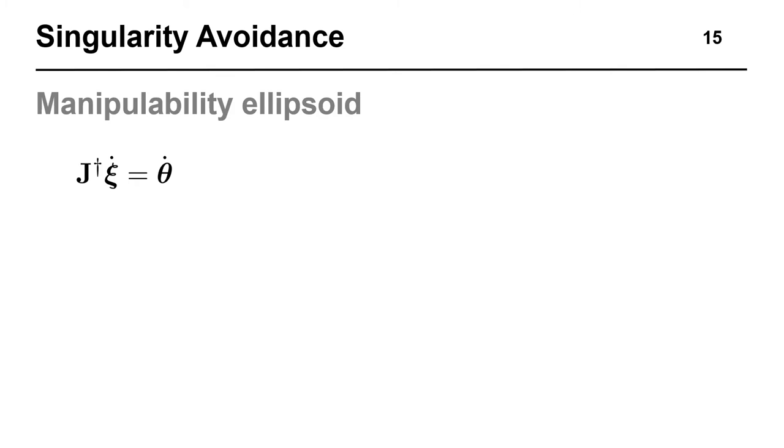Luckily, it turns out that we can use geometric reasoning to develop intuitive singularity avoidance indices that can be optimized as part of control and motion planning algorithms. By self-multiplying both sides of the Jacobian identity, we arrive at a geometrical interpretation of Jacobian conditioning.